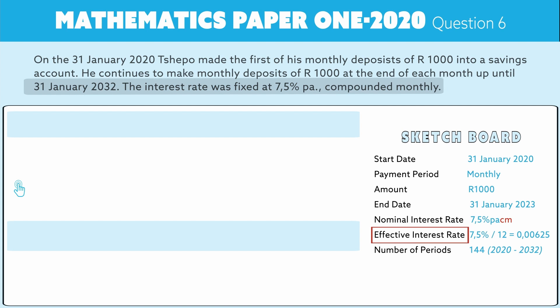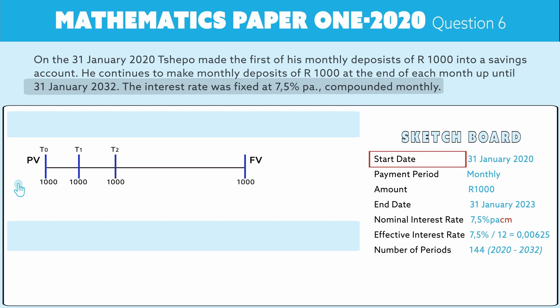I always suggest using timelines in your work so you can see where it starts, where it stops, and how many periods there are. On the 31st of January, starting with question 6.1.1, our timeline starts there. Tsepo made his first deposit — let's call that timeline zero — he pays a thousand rand into this account. We work in terms of months since he makes monthly deposits.